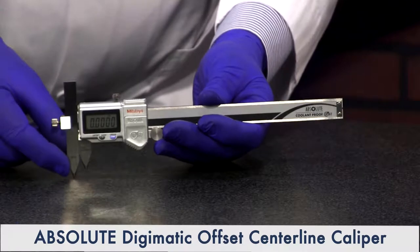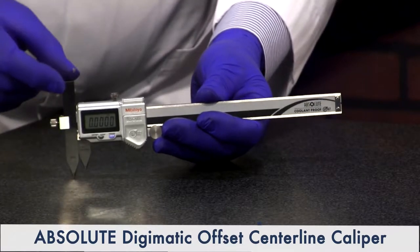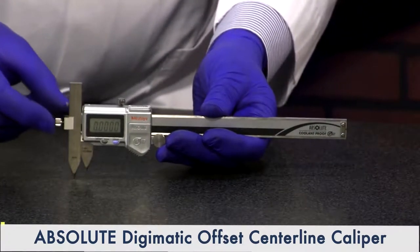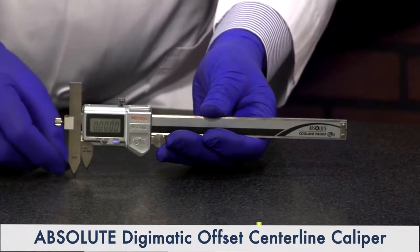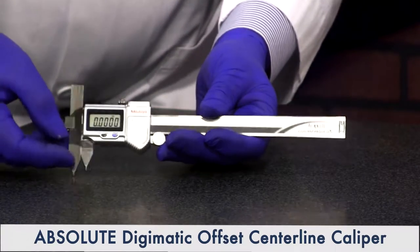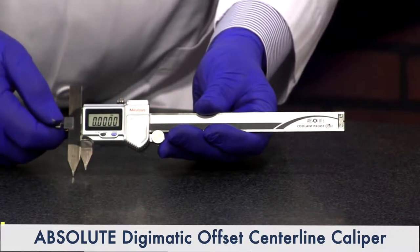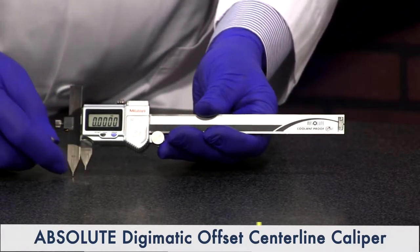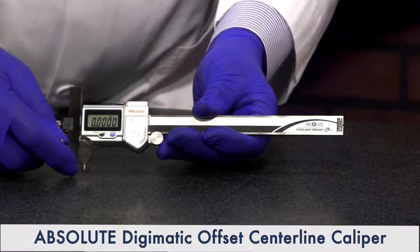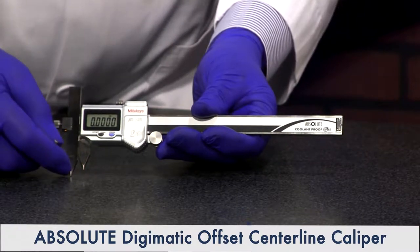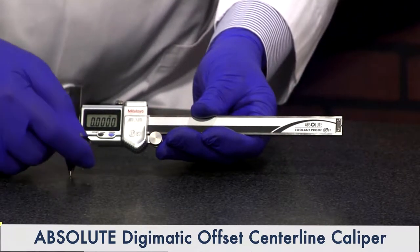The first thing you'll notice is instead of a fixed jaw on this side, it's adjustable. You can loosen here and move it higher, move it lower. Second thing you might notice are the actual tips. They come to a tapered point, and they're exact known distance. The actual blade is 400 thousandths wide and the tip is right at 200 on both of them.